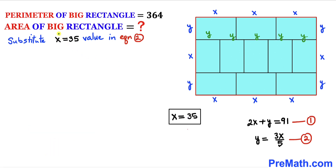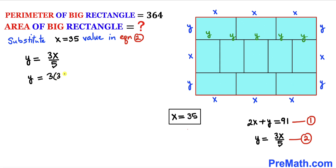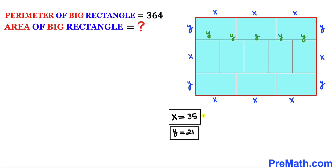Now let's plug x = 35 into equation 2 to solve for y. Substituting gives y = 3 × 35 / 5 = 105/5 = 21 units. So the tiny rectangle has length x = 35 and width y = 21.